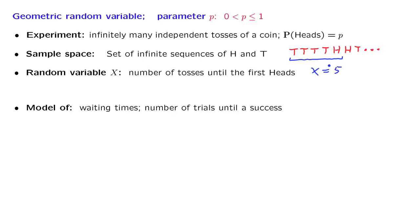We're counting the number of trials it takes until a success is observed for the first time. These trials could be experiments of some kind, could be processes of some kind, or they could be whether a customer shows up in a store in a particular second or not. There are many diverse interpretations of the word 'trial' and 'success' that allow us to apply this model to a given situation.